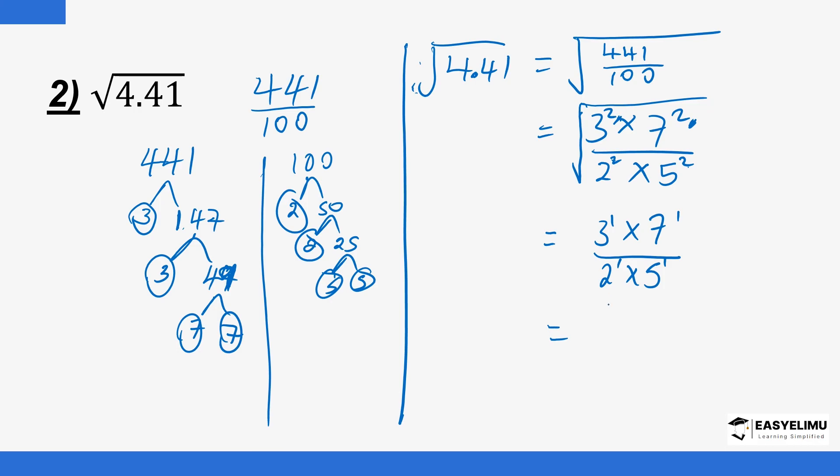So we now have 3 by 7 over 2 by 5, which is 21 over 10, and that is going to be 2.1. So it means the number that we need to square to arrive at 4.41 is 2.1. If you don't know how you are getting 2.1, if you divide by 10, the decimal point simply shifts to the left hand side, the number of steps that is going to be the number of zeros. So we just move it one step to get 2.1.